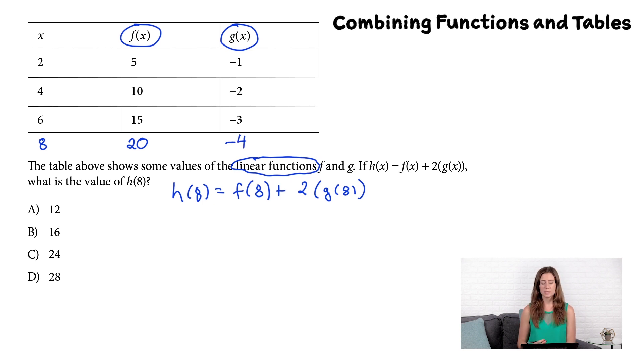And now I just need to plug these into my equation. I have 20 plus 2 times negative 4. That's 20 plus negative 8, which is 12. And A is my answer.